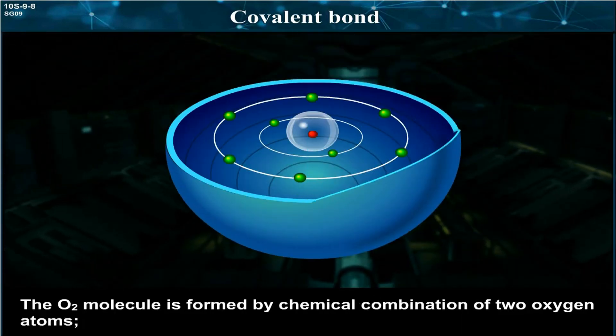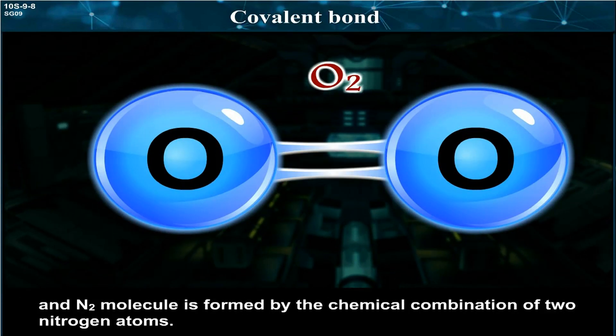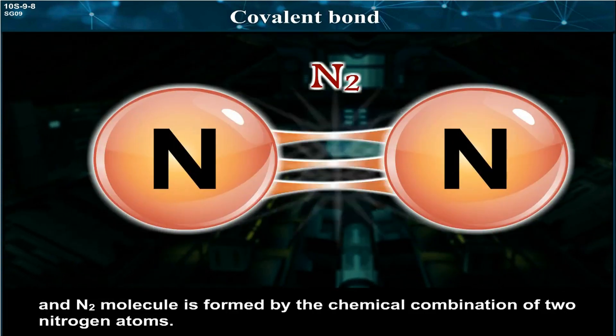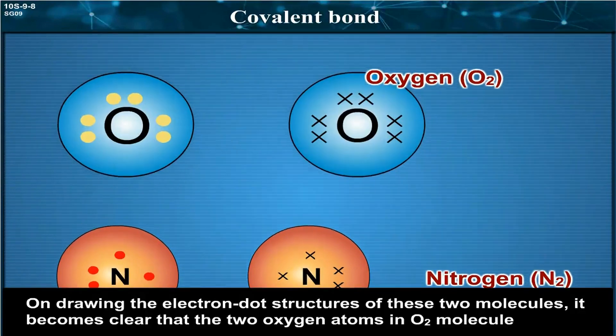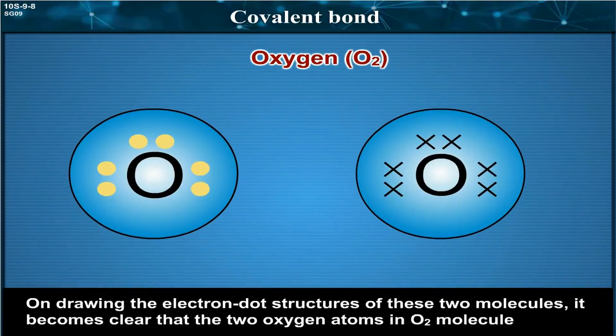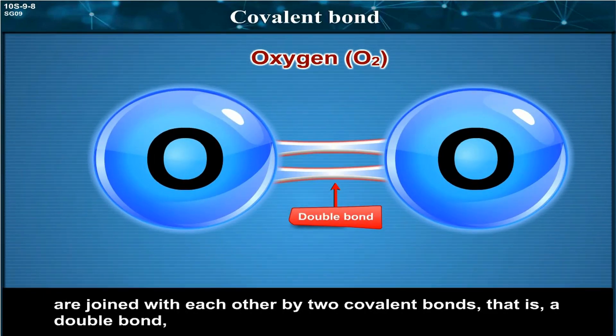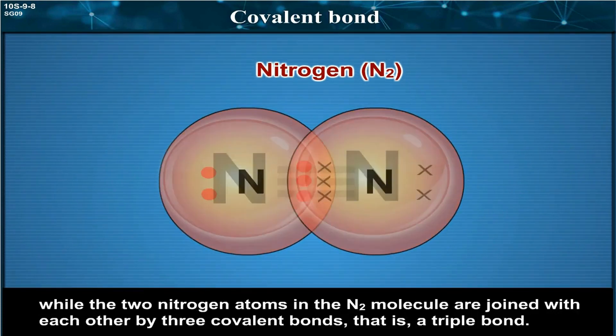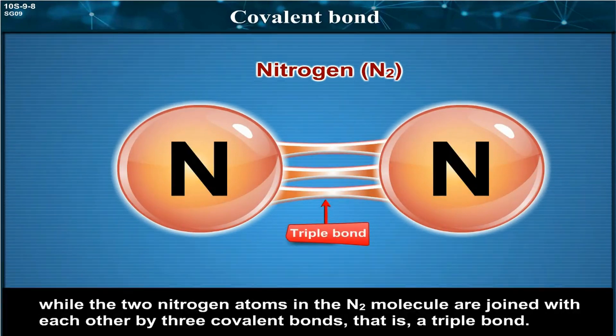The O2 molecule is formed by chemical combination of two oxygen atoms. An N2 molecule is formed by the chemical combination of two nitrogen atoms. On drawing the electron dot structures of these two molecules, it becomes clear that the two oxygen atoms in O2 molecule are joined with each other by two covalent bonds, that is a double bond, while the two nitrogen atoms in the N2 molecule are joined with each other by three covalent bonds, that is a triple bond.